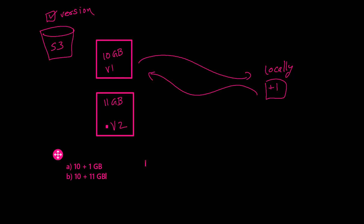For you and me this looks like an object with just an increment of 1 GB, but for S3 it is treated as an independent object. Yes, it maintains a link, but version 2 is consuming the full 11 GB of space. The previous one had 10 GB, and now we have one more object of 11 GB, so the total I would be paying Amazon S3 is 21 GB of storage capacity. Versions are not incrementally maintained — they are independent copies. So be conscious of how many versions you keep and how long, and use lifecycle policy to remove older versions after a specific criteria.